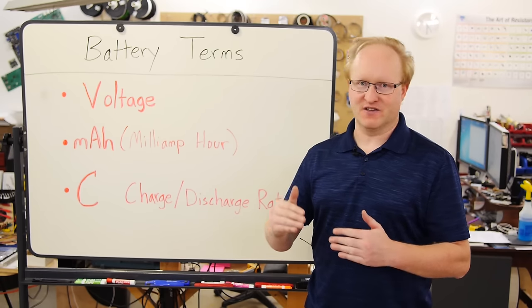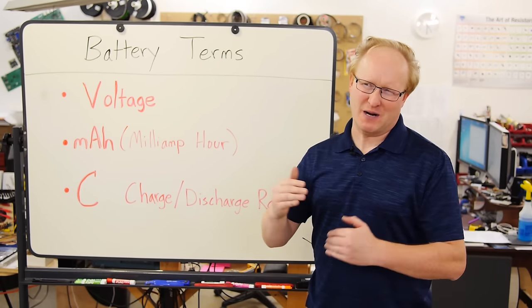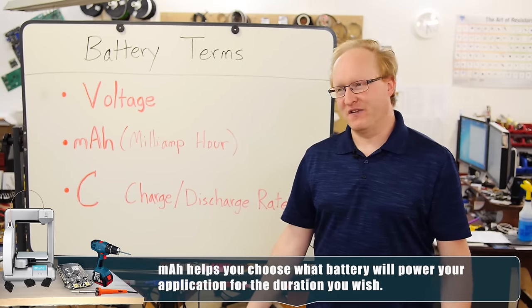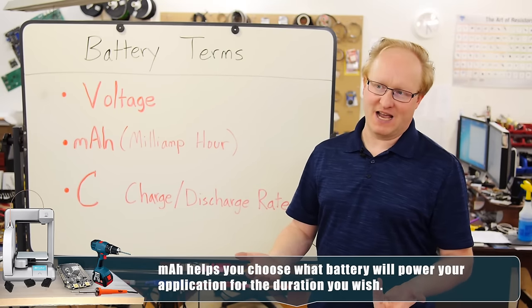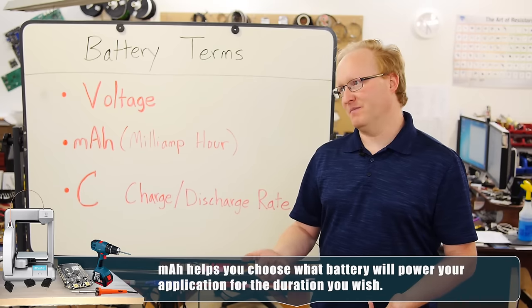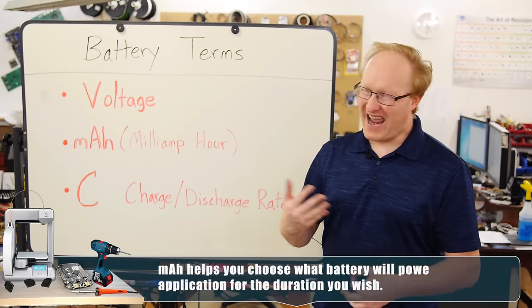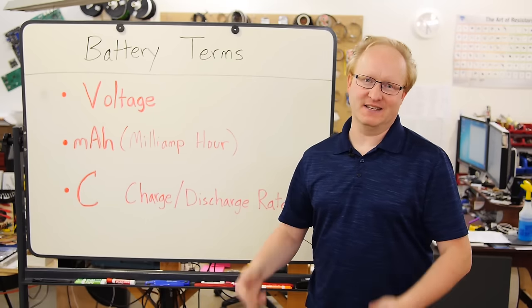But even then, you want to kind of err on the side of caution and say, I'll probably only get 80% of that. So if you've got a 2,000 milliamp hour battery and your application is 250 milliamps, you'd say 8 hours, but probably at least 6.